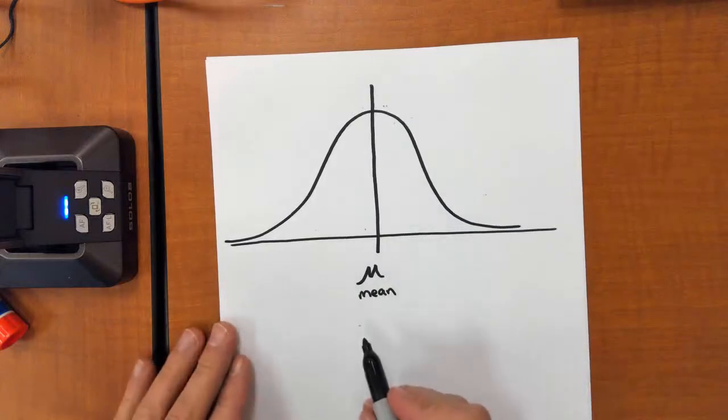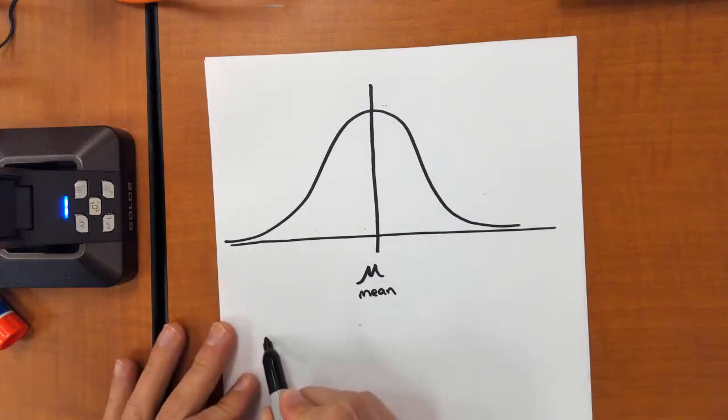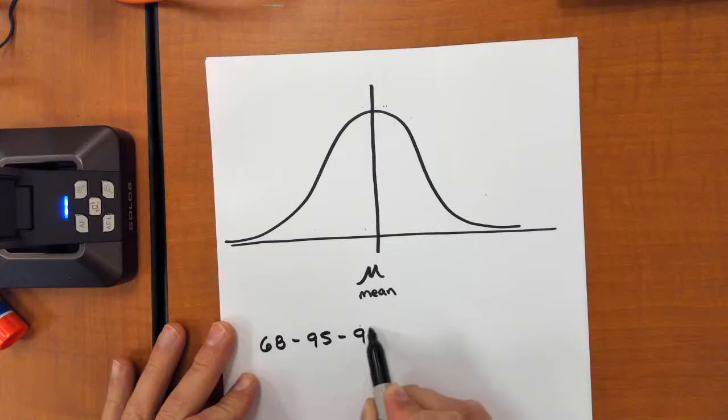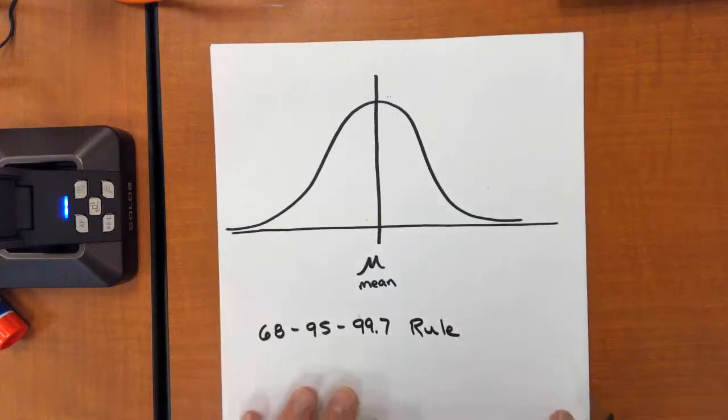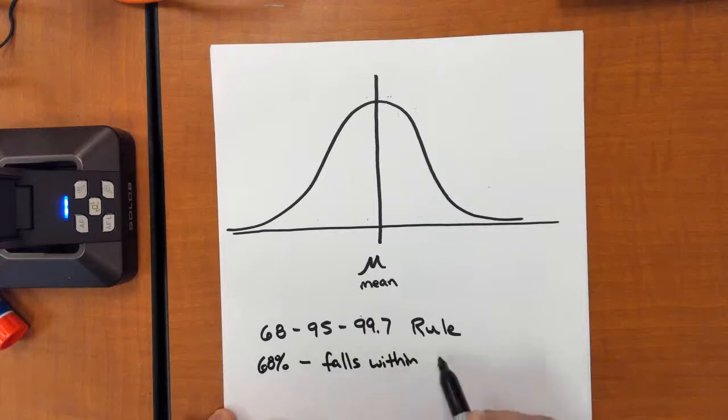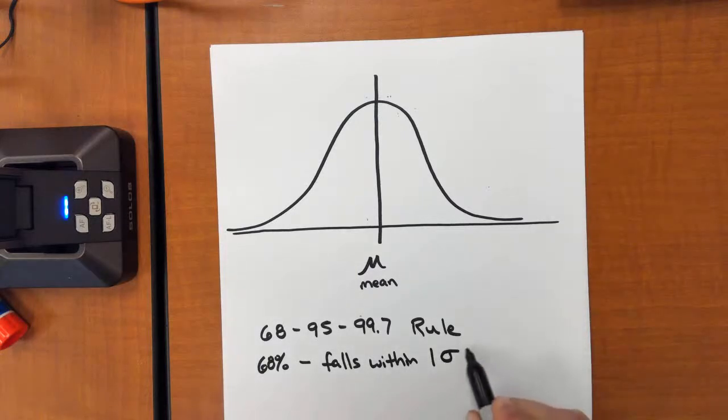And there's a rule called the empirical rule, also known as the 68, 95, 99.7 rule. And this rule says that within a normal distribution, 68% of the data falls within one standard deviation. Now, the symbol for standard deviation is the Greek letter sigma. That means one standard deviation.